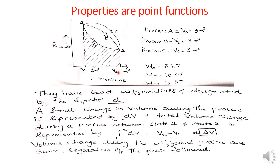If we follow path A, the change in volume is the same — final volume 5 m³ minus initial volume gives 3 m³. If we follow path B or path C, the change in volume is the same. For processes A, B, and C, the change in volume is the same regardless of the path followed. Hence, these are called point functions — they are mainly dependent on the end states, not on which path is followed.